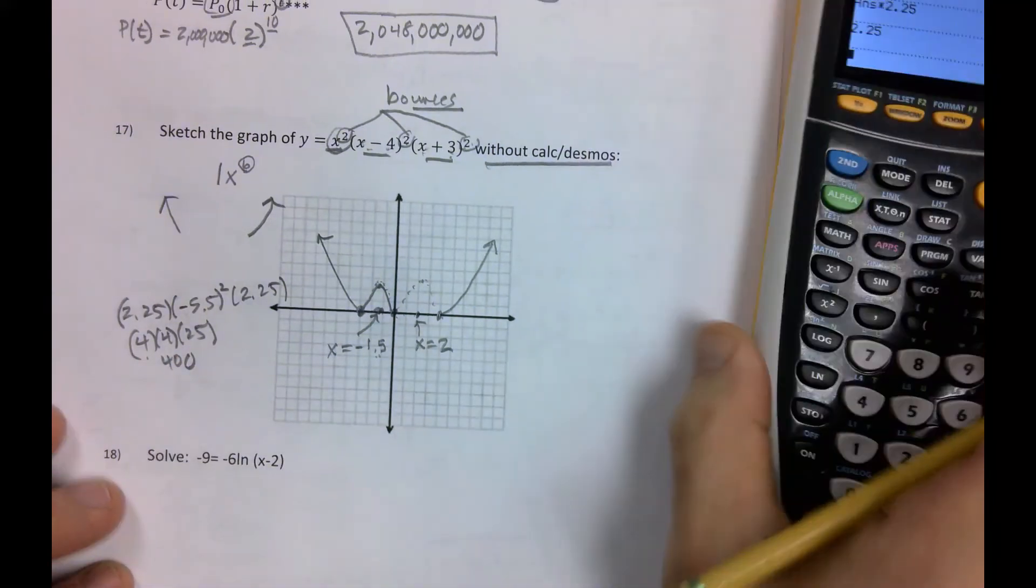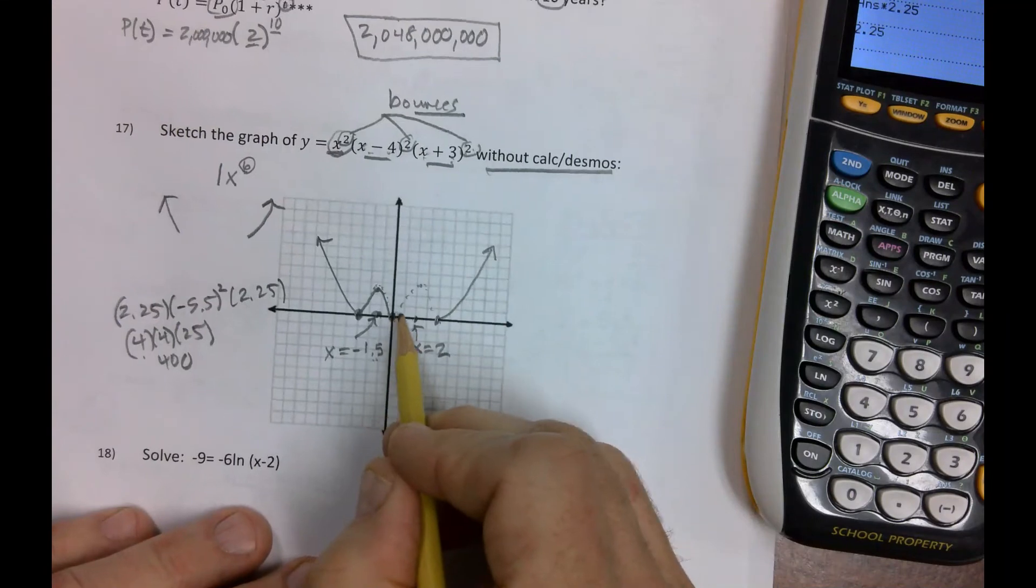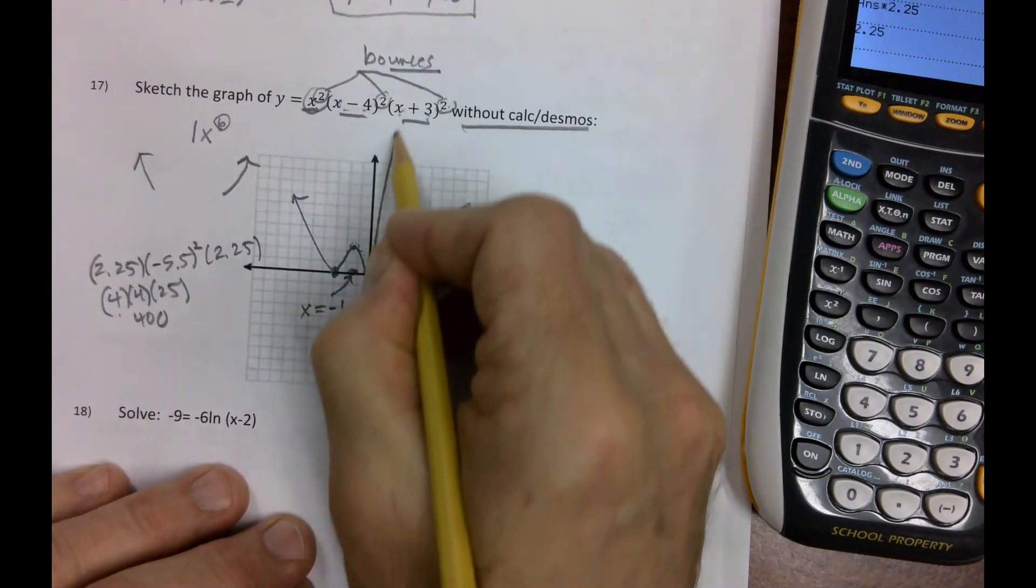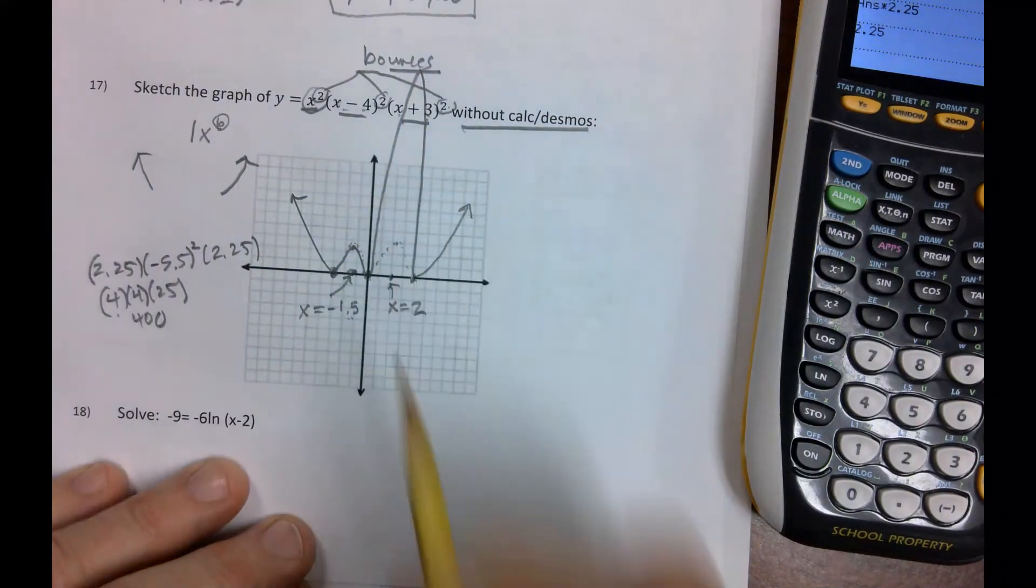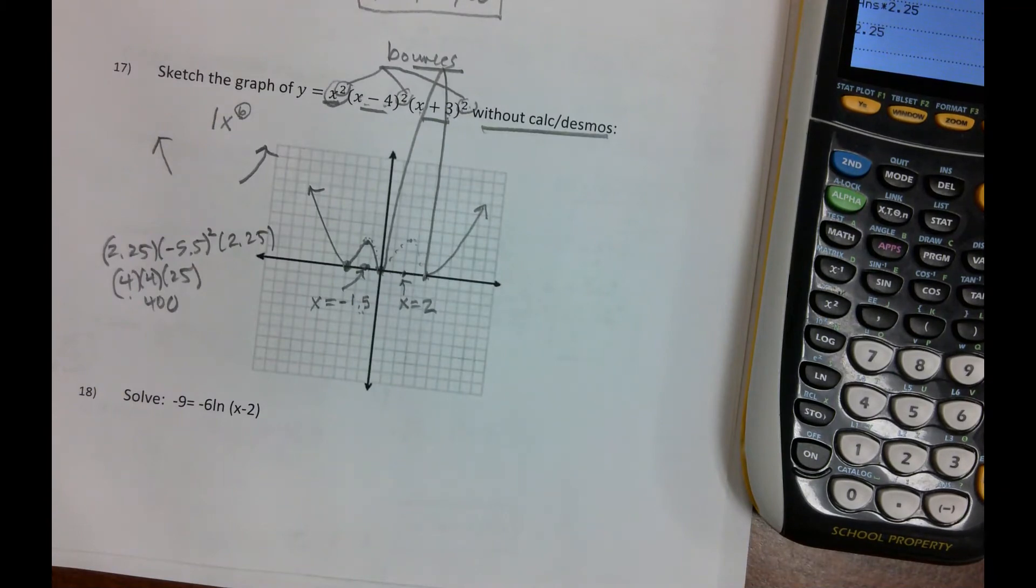So that is 100 times 4 or 400. Obviously, we're not going to get that on our screen. So that's going to go way up here and then come back down. And you can check it with decimals, but we're not going to worry about that.